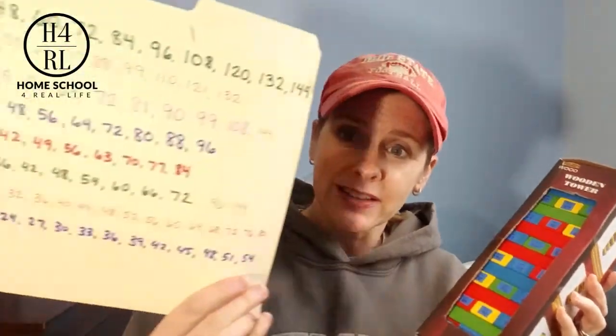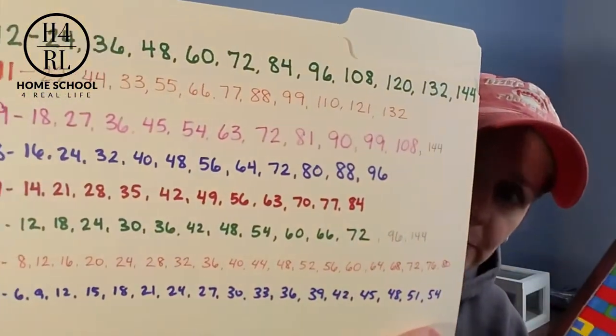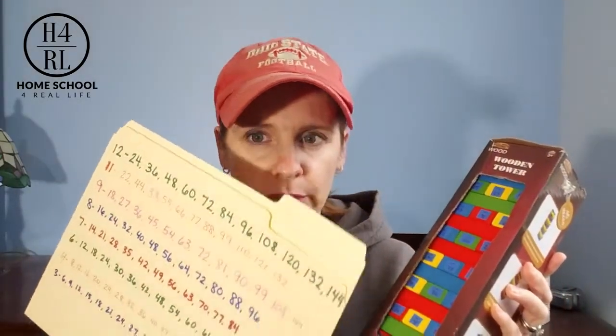So on your turn, you roll, you get the sum, and then you pull a block that has a multiple of that number. Now my kids don't know them lickety-split yet, so I made this chart for them that lists the multiples of the numbers. That way they're still practicing — they're seeing it, they're hearing it each time — but they don't have to come up with every single number. So for us, this is a helpful tool right now. Whoever's turn it is, they have that in front of them.